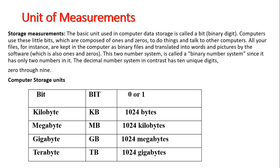Data is measured using units of measure called binary digits. The smallest unit of data is called a bit or binary digit, which is a 0 or 1. When we have 8 bits, they form what is called a byte. The byte becomes the smallest unit of usable data, while the bit is the smallest unit of data. The byte is 8 bits, which is equivalent to one character.